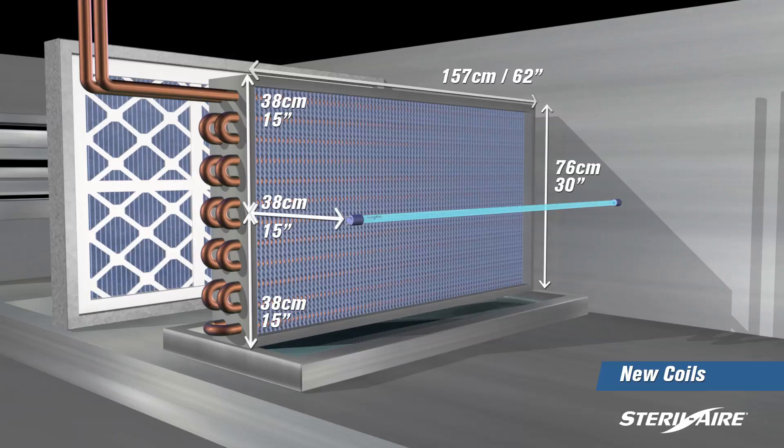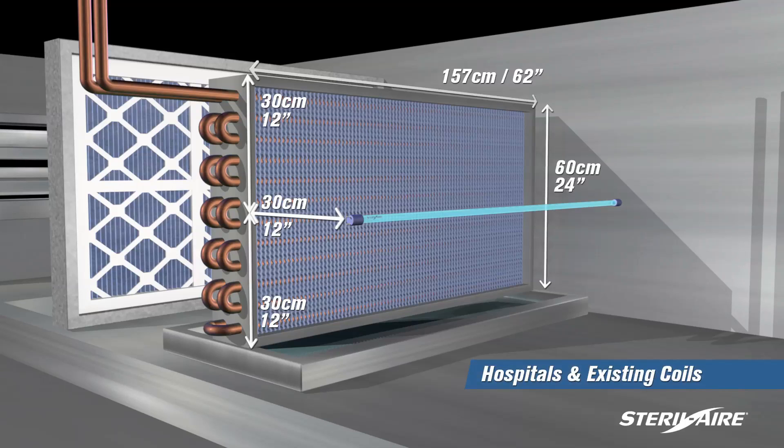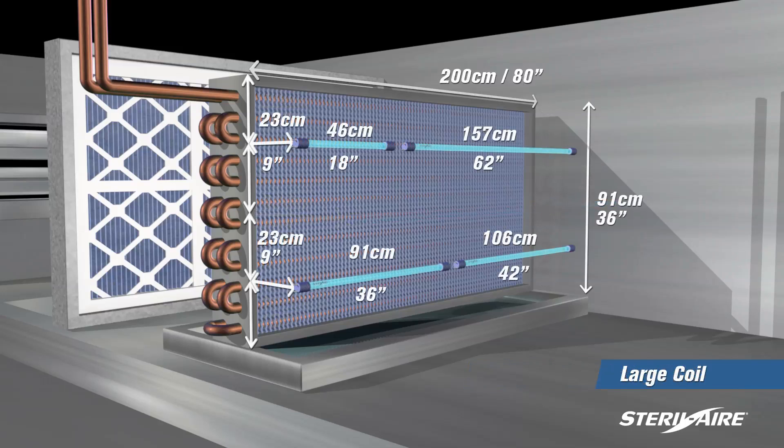In hospitals and existing coils, use one row every 24 inches, 60 centimeters. For bigger coils, add rows and emitters.